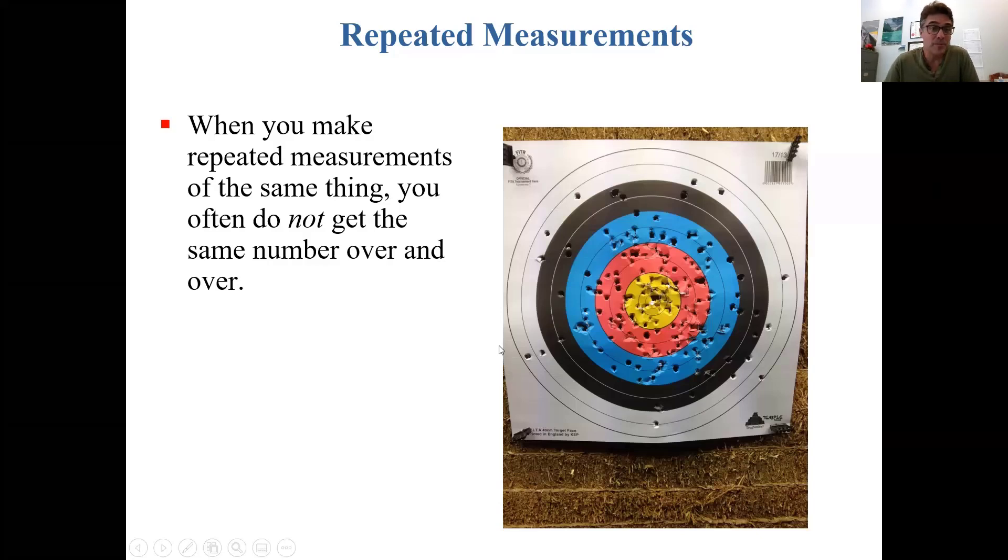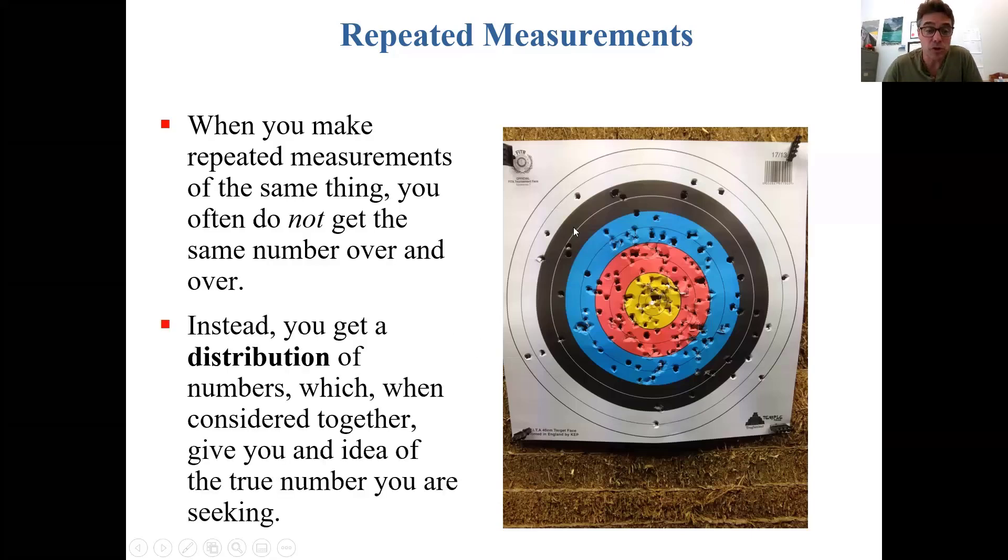Let's start with repeated measurements. When you make repeated measurements of the same thing, you often do not get the same number over and over. Instead you get a distribution of numbers, which when considered together give you an idea of the true number you are seeking.